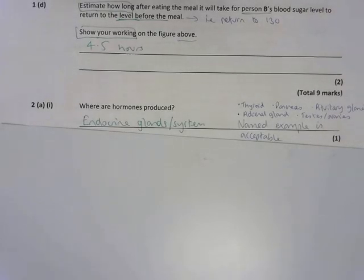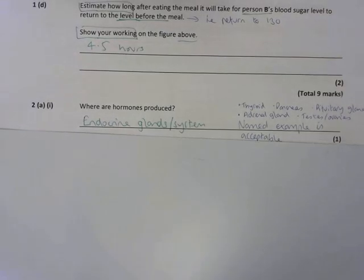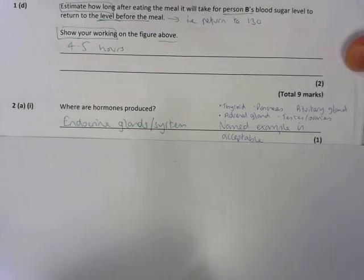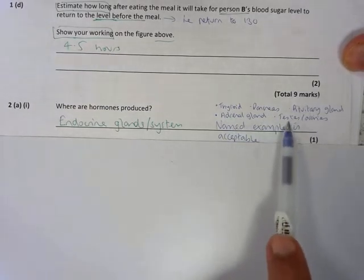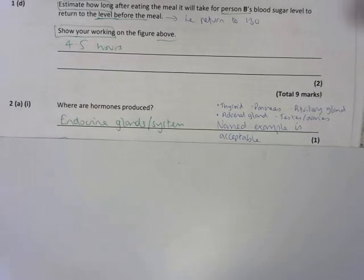Question 2, hormones are produced where? Well, they're produced in endocrine glands or by the endocrine system. If you said a named gland, you also get the mark. Thyroid, adrenal gland, pancreas, pituitary gland and the testes and ovaries are all examples of glands.